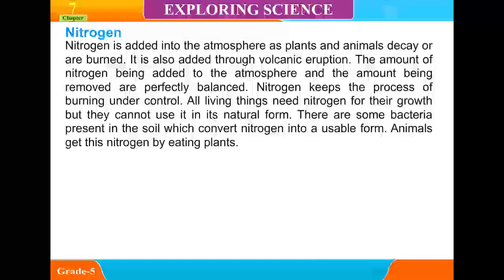Nitrogen is added into the atmosphere as plants and animals decay or are burned. It is also added through volcanic eruption. The amount of nitrogen being added to the atmosphere and the amount being removed are perfectly balanced. Nitrogen keeps the process of burning under control. All living things need nitrogen for their growth, but they cannot use it in its natural form. There are some bacteria present in the soil which convert nitrogen into a usable form. Animals get this nitrogen while eating plants.